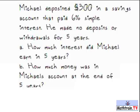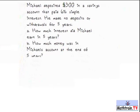What we're trying to do is find A, how much interest did Michael earn in 5 years, and B, how much money was in the account at the end of the 5 years, which means once he started, how much did he get after the interest.